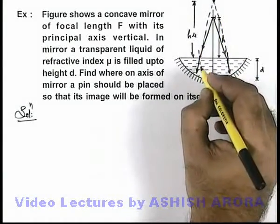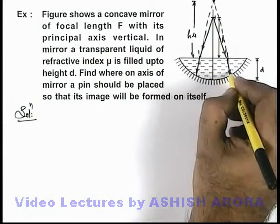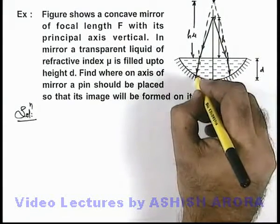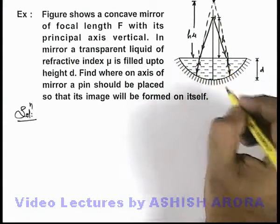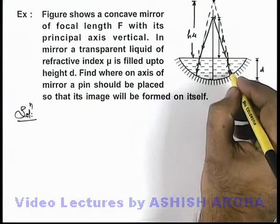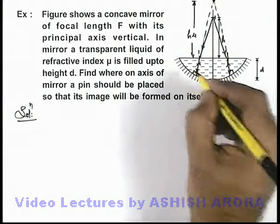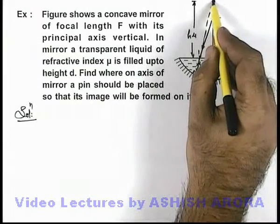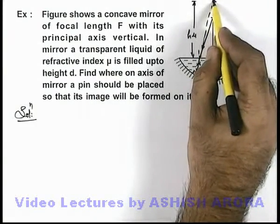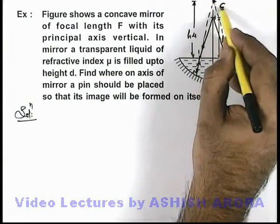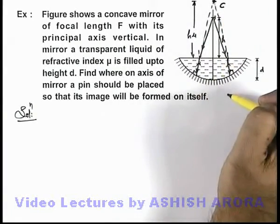We are required to produce the image of the pin on itself, which means the light rays must retrace their own path. Retracing is possible only when the light rays are incident on the mirror normally. This means the point from where these rays appear to be coming must be the centre of curvature of this mirror.